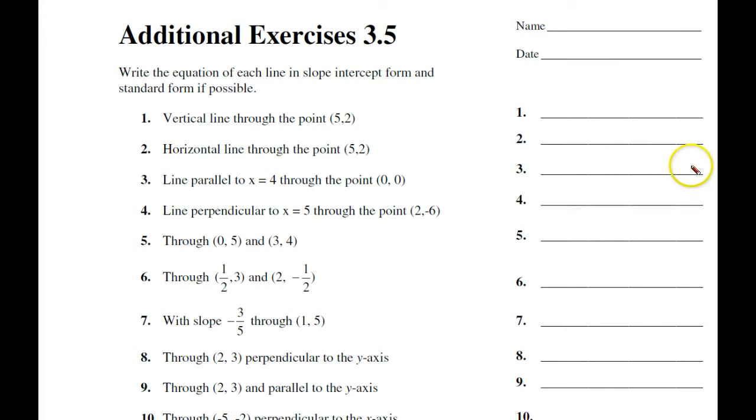I've had this on the board, and here it is: y minus y sub 1 equals m times x minus x sub 1. Notice, if you have one point and you know the slope, you can put it into slope-intercept, and from that convert it to standard form. So let's take a look.